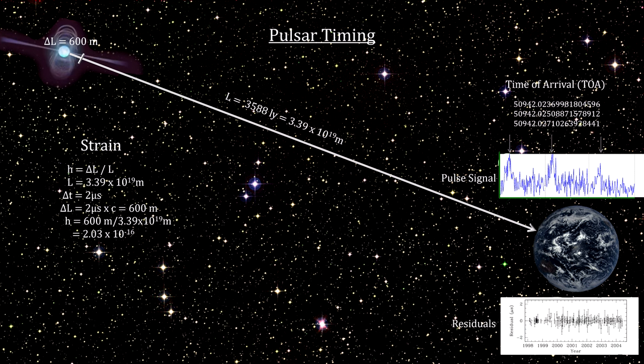Differences between the actual time and the expected time are called residuals. For a steady-state situation, we would see the average over time as a horizontal line, but a very long period gravitational wave would continuously increase the proper distance traveled by a pulse over a long-term observation program. This plot shows the effect of an increase in travel time of 2 microseconds over 6 years.